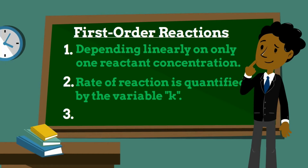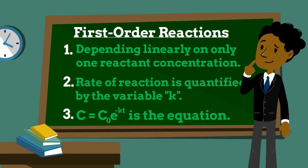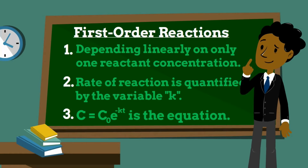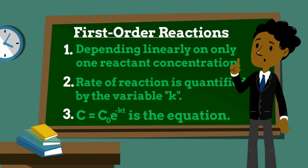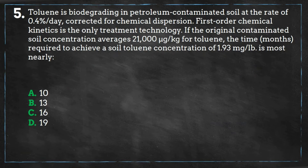The current concentration C equals the initial concentration times E raised to the negative rate coefficient multiplied by time.